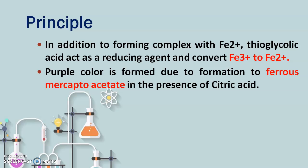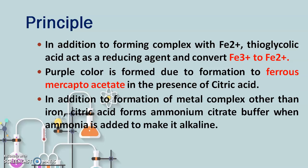If iron is present in the sample, then only we will get ferrous mercaptoacid. In addition to the formation of the metal complex, citric acid forms an ammonium citrate buffer when ammonia is added to make the solution alkaline. Citric acid plays the role of preventing the reaction between ferrous iron and ammonia, because if that reaction takes place, proper confirmation of the iron content would not occur.